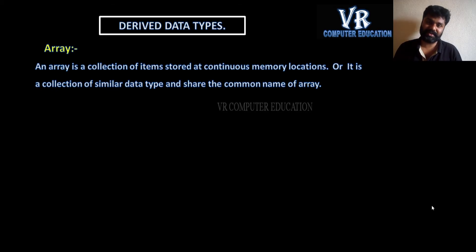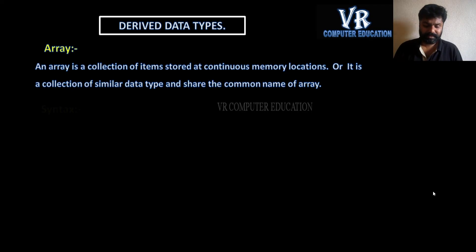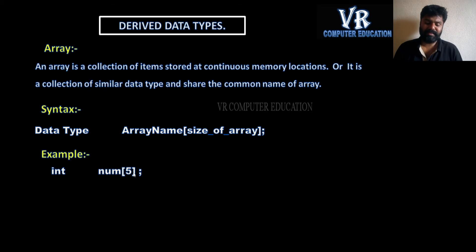For now, we'll cover only the definition, a small example for each. An array is a collection of items stored at continuous memory locations — or you can say it is a collection of similar data type elements that share the common name of the array. Syntax: data type, array name, size of array.